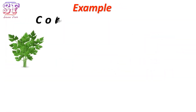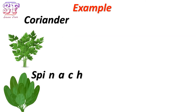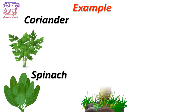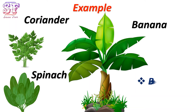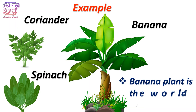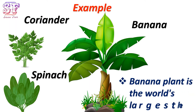Examples are coriander, spinach, and banana. The banana plant is the world's largest herb.